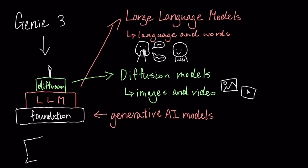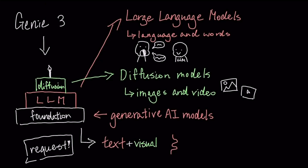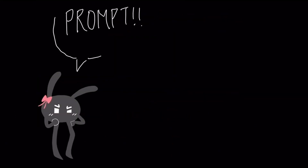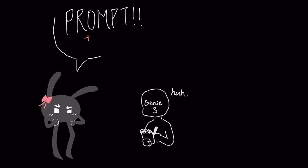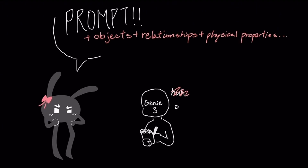For how it can make your requests come to life, Genie 3 connects the textual understanding with the visual generation in a dynamic way. When you provide a text prompt, the model first needs to understand the scene you're describing — like the objects, their relationships, or some physical properties — to get a grasp on what you're thinking.